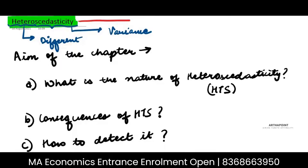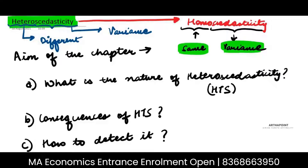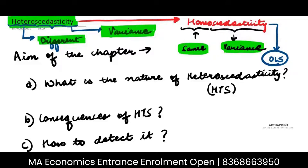Let's try and contrast this with the concept of homoscedasticity. Homoscedasticity means same, and scedasticity again means variance. So, homoscedasticity is the concept of same variance, whereas heteroscedasticity is the concept of different variance. One of the assumptions of the ordinary least squares method is homoscedasticity.